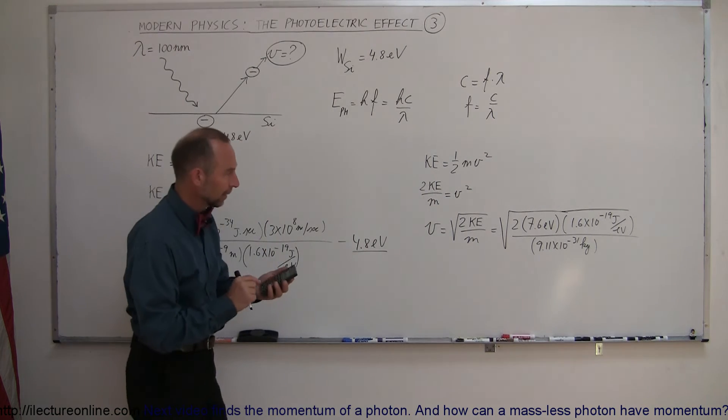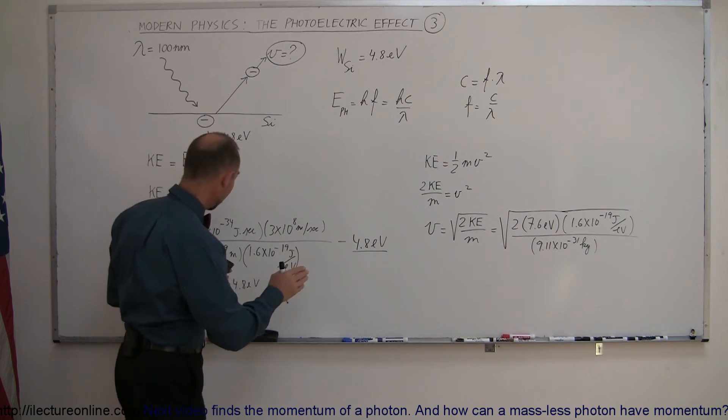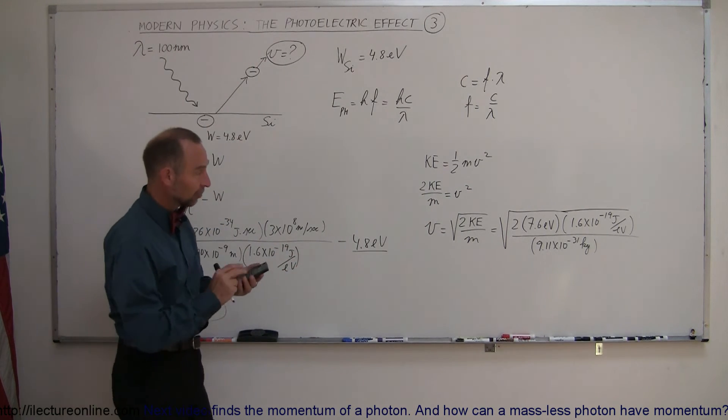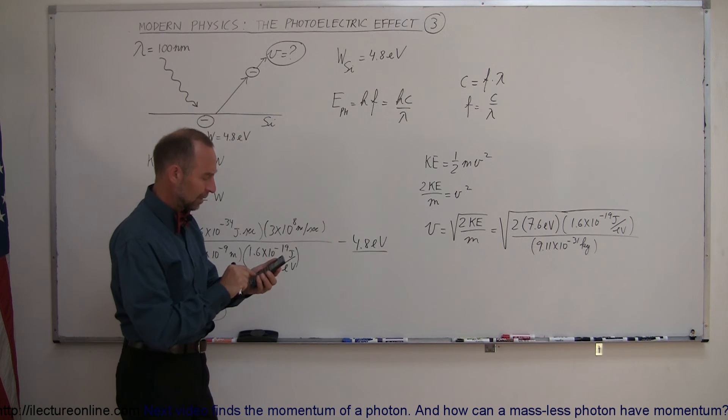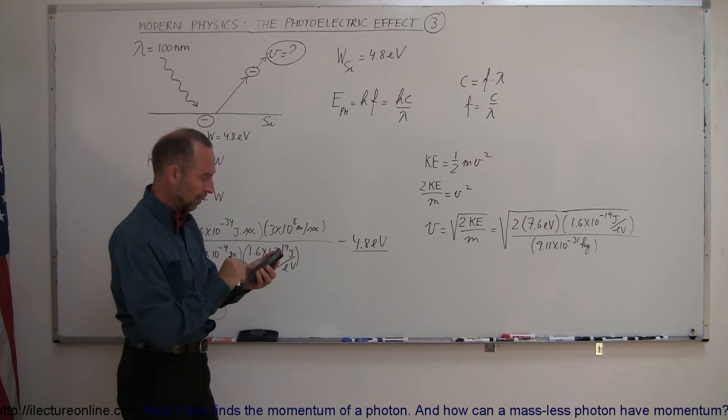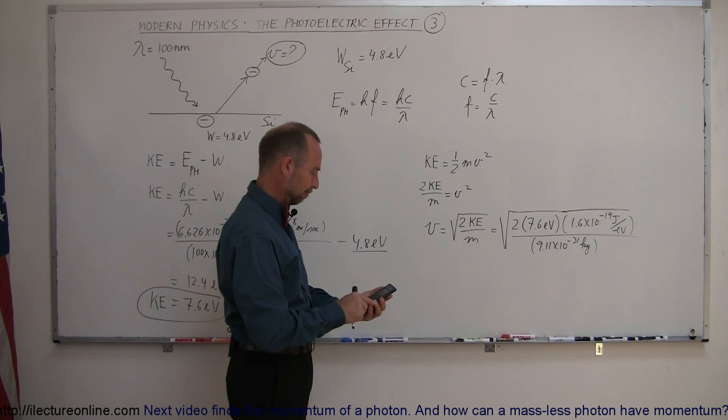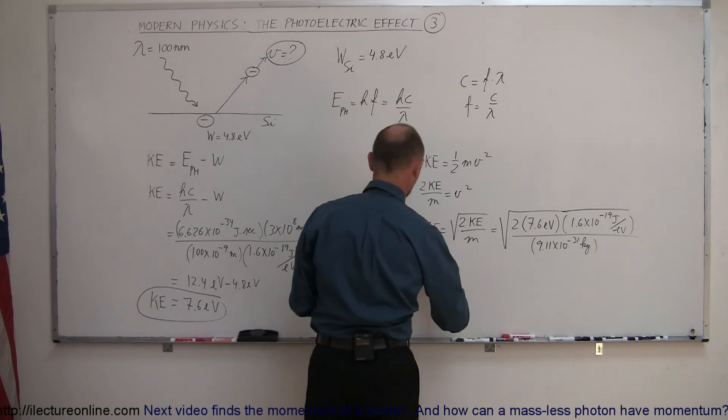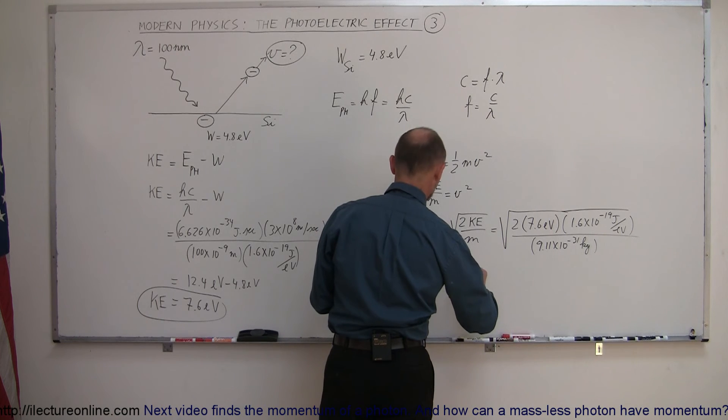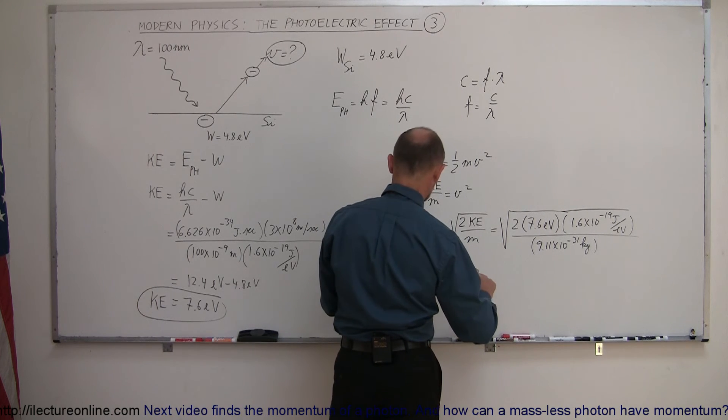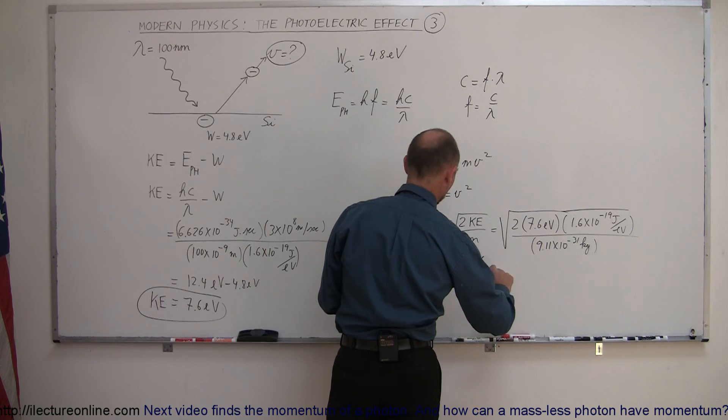So let's see what we get there. Keeping in the significant figures from the previous calculation, which is a little bit more accurate than 7.6. So it'll be times 2 times 1.6 e to the 19 minus, divide by 9.11 e to the 31 minus. And then taking the square root of that. And what do we get here? Pretty fast. So velocity will be equal to 1.6 times 10 to the 6th meters per second.